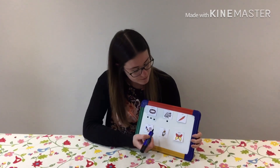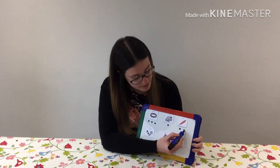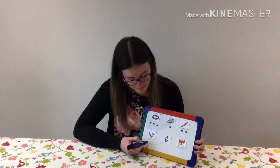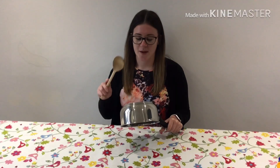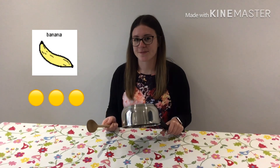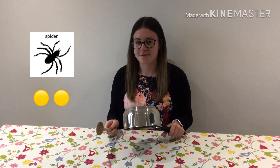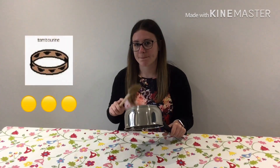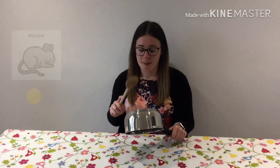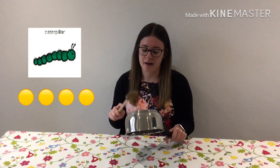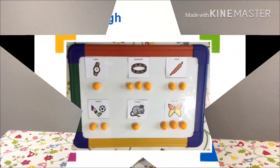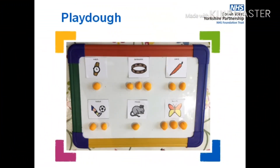Mouse. Carrot. Using a drum to beat the sounds — this could also be done using objects in and around your home. Your child could also use play-doh to mark the syllables.